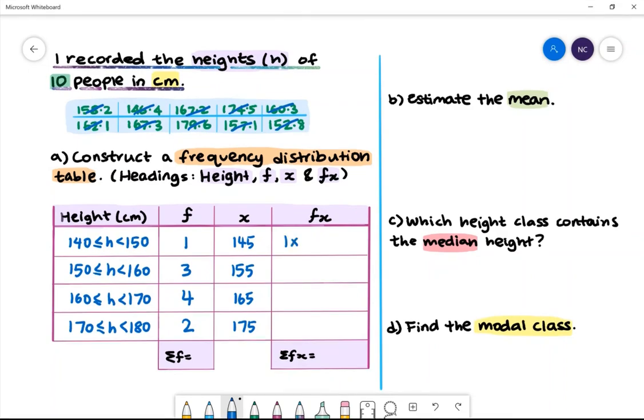Our first answer will be given by 1 multiplied by 145 to get 145. 3 multiplied by 155 gives 465. 4 multiplied by 165 gives 660. 2 multiplied by 175 gives 350.